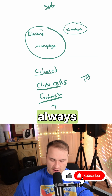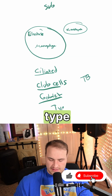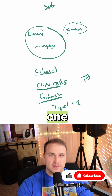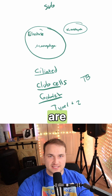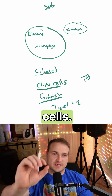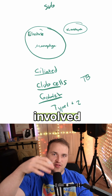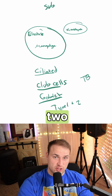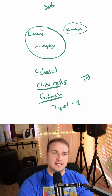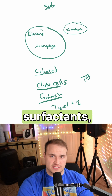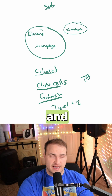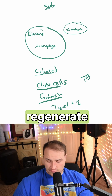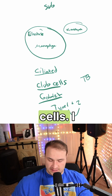You're always going to see type 1 and type 2 pneumocytes. Type 1 pneumocytes are thin squamous cells involved in gas exchange. Type 2 pneumocytes secrete pulmonary surfactant and can also regenerate type 1 cells.